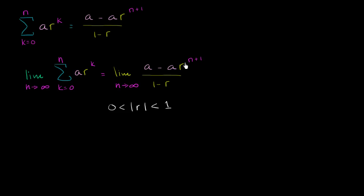Well, if you take something with an absolute value less than 1, and you take it to higher and higher and higher exponents, every time you multiply it by itself, you're going to get a number with a smaller absolute value. So this term right over here, this entire term, is going to go to 0 as n approaches infinity.